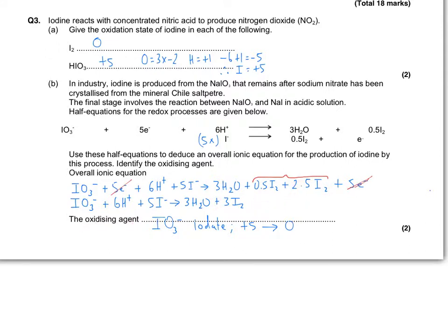The oxidizing agent is the chemical which gains electrons. The iodine is going from plus five oxidation state to zero oxidation state. Plus five there, zero over there. So it is the oxidizing agent.